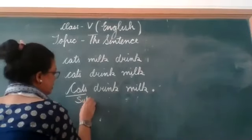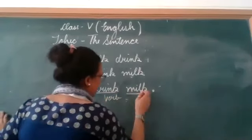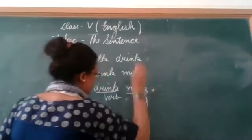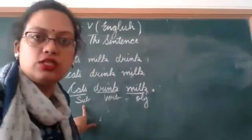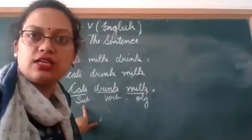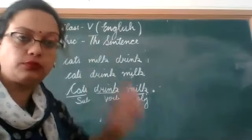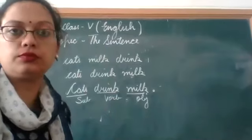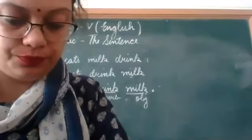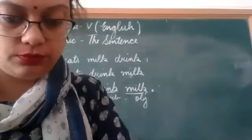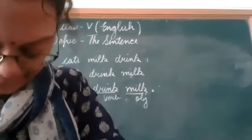So the sentence structure is: first we have subject, then we have the verb, and then we have the object. Subject means the person or thing we are talking about. In 'cats drink milk,' we are talking about cats, so 'cats' is the subject.